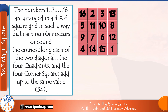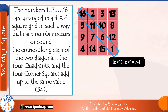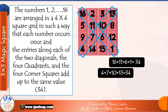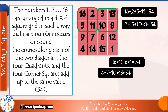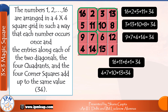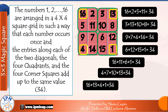Additionally, in a 4x4 square, the entries along each of the two diagonals, the four quadrants, and the four corner squares also add up to the magic constant 34. The two diagonals: 16 plus 11 plus 6 plus 1 is equal to 34, and 4 plus 7 plus 10 plus 13 is equal to 34. The four quadrants: Quadrant 1: 16 plus 2 plus 5 plus 11 is equal to 34. Quadrant 2: 3 plus 13 plus 10 plus 8 is equal to 34. Quadrant 3: 9 plus 7 plus 4 plus 14 is equal to 34. Quadrant 4: 6 plus 12 plus 15 plus 1 is equal to 34. And the four corners: 16 plus 13 plus 4 plus 1 is equal to 34 — the magic constant.